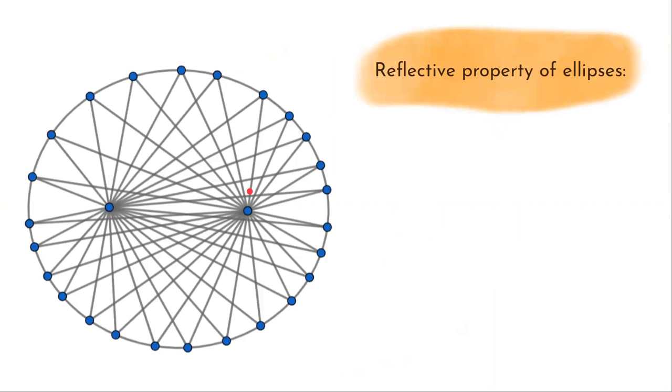This amazing property is called the reflective property of ellipses, and today we're going to prove it using only basic geometry.